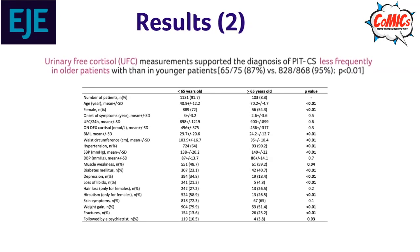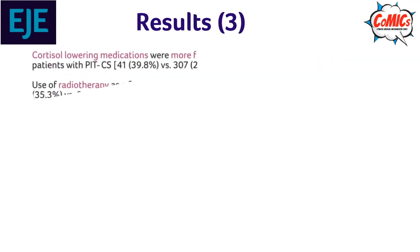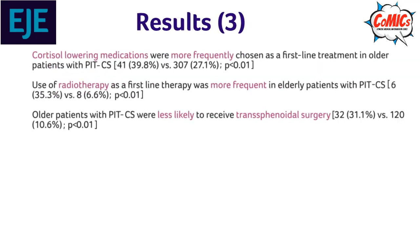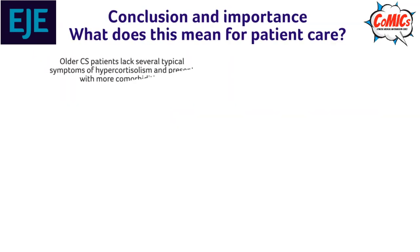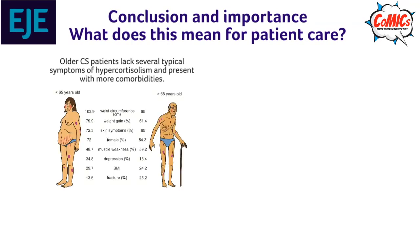Older patients with pituitary-dependent CS more frequently received cortisol-lowering medication and radiotherapy as first-line treatment, while surgery was the preferred management approach in younger patients. When transsphenoidal surgery was performed, the remission rate was lower in older patients.